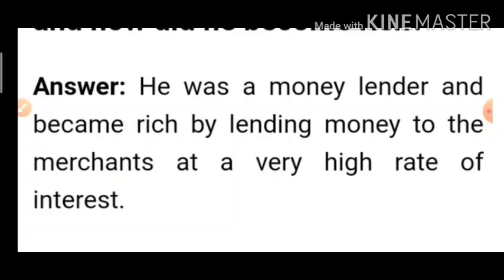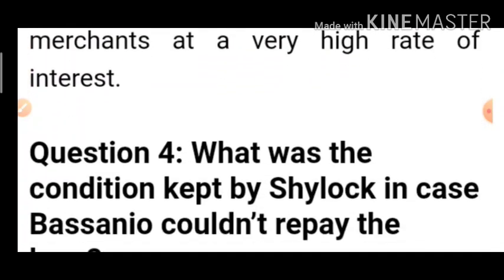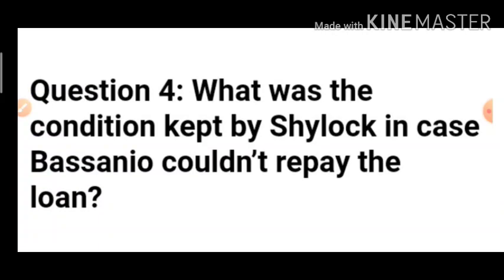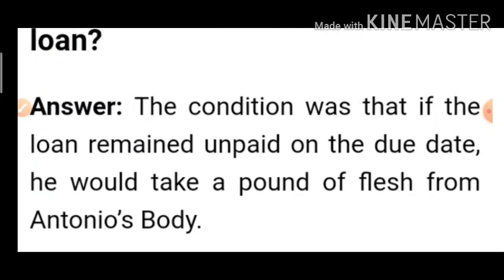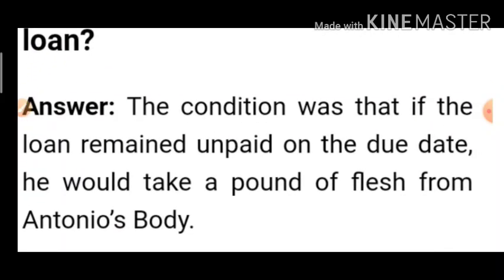Question 4: What was the condition kept by Shylock in case Bassanio couldn't repay the loan? Answer: The condition was that if the loan remained unpaid on the due date — if he was unable to pay the amount of three thousand ducats within three months — Shylock would take a pound of flesh from Antonio's body, which is almost 400 grams.